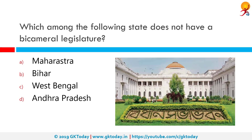Which among the following states does not have a bicameral legislature? Among the given options, West Bengal does not have a bicameral legislature. The seven states that do have bicameral legislatures are Bihar, Maharashtra, Uttar Pradesh, Jammu and Kashmir, Karnataka, Andhra Pradesh and Telangana.